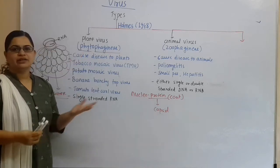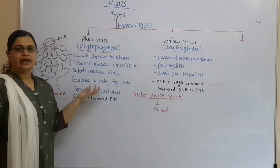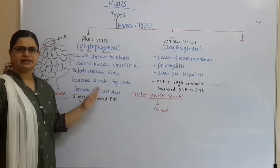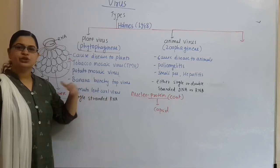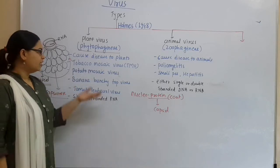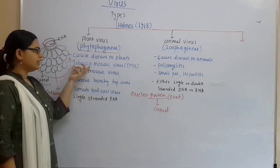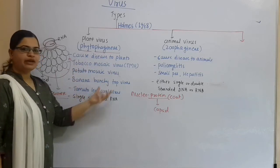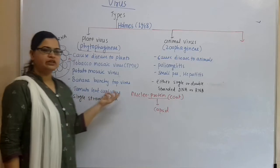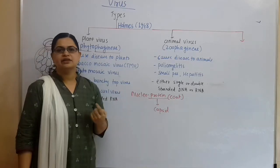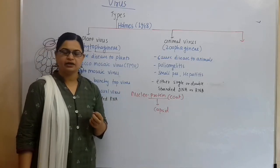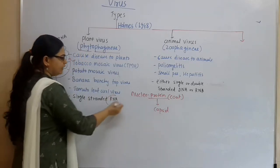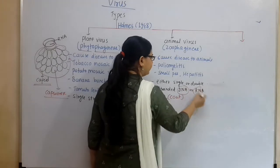Plant viruses have the ability to cause disease to plants. Examples include potato mosaic virus, TMV (Tobacco Mosaic Virus), banana bunchy top virus, and tomato leaf curl virus. For plant viruses, the genetic material is single-stranded RNA (SS RNA). For animal viruses, it can be single- or double-stranded DNA or RNA.